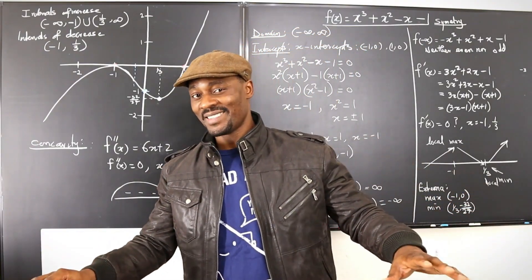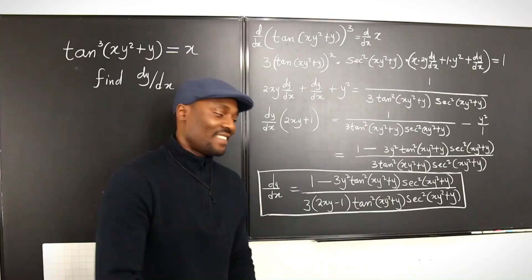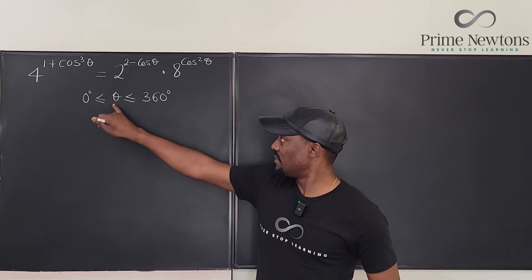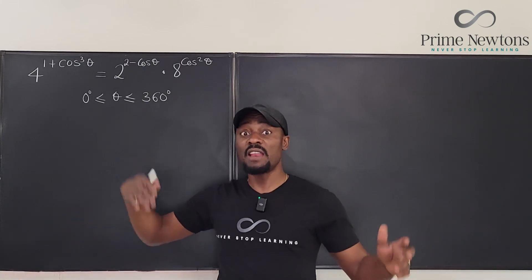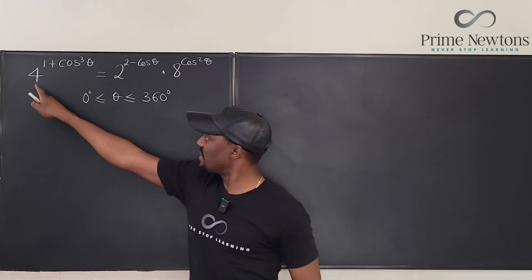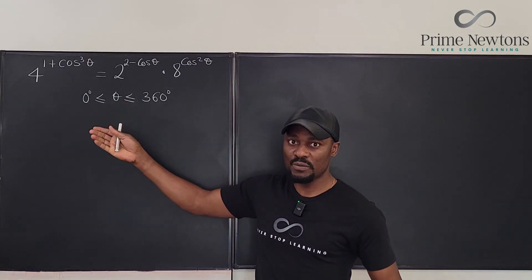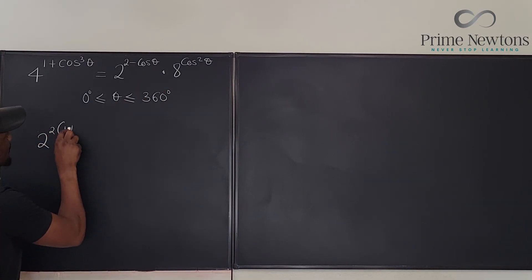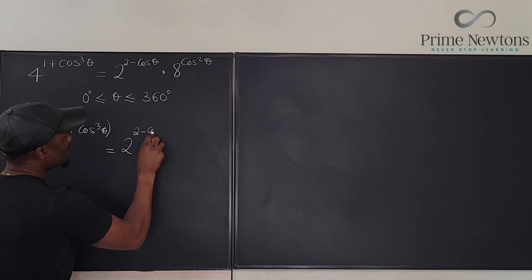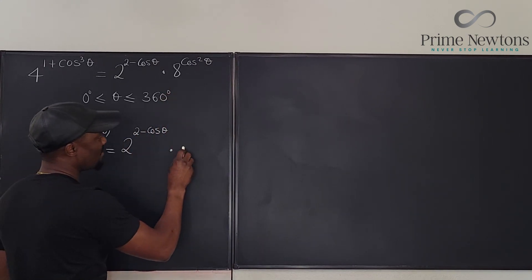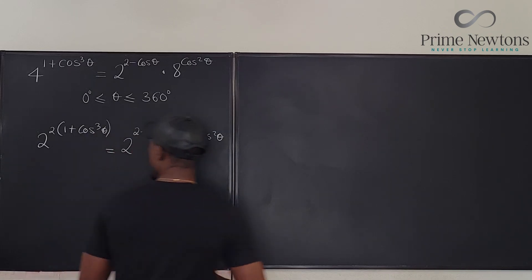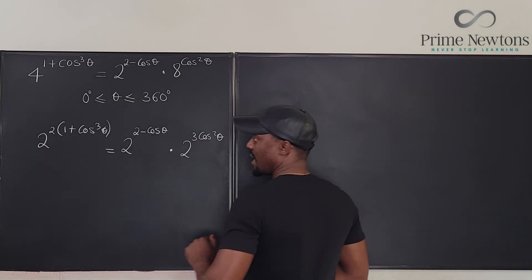We're supposed to find all values of theta from 0° to 360°, so we have a finite number of solutions. Everything is a power of 2, so on the left I have 2 to the power (2 to the 1 plus cosine cubed theta), and on the right I have 2 to the (2 minus cosine theta) multiplied by 8, which can be written as 2 to the 3rd, raised to cosine squared theta.